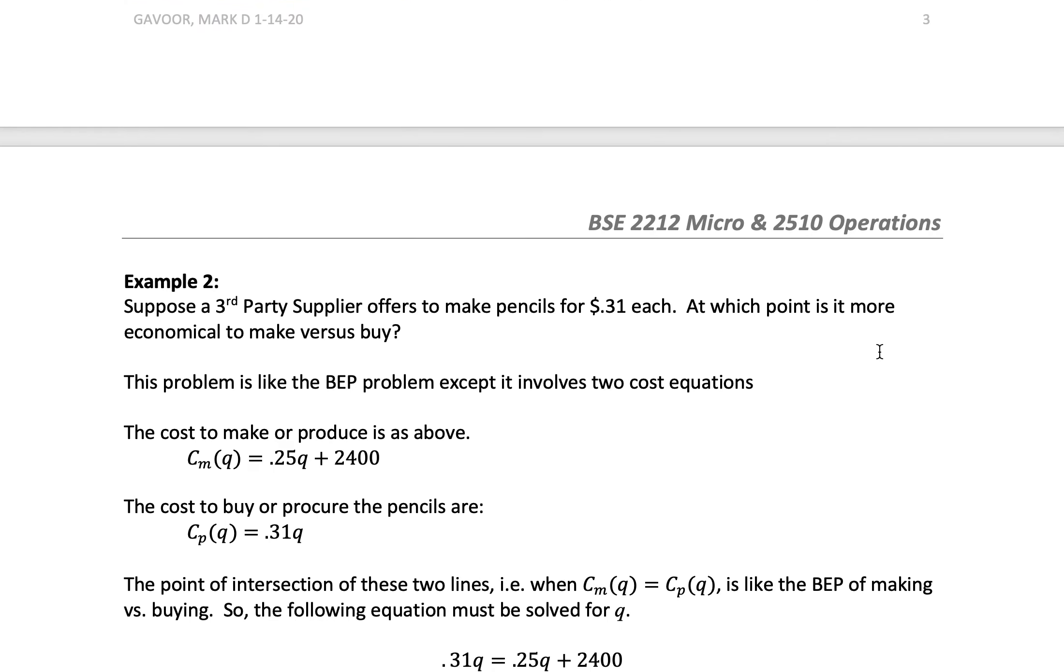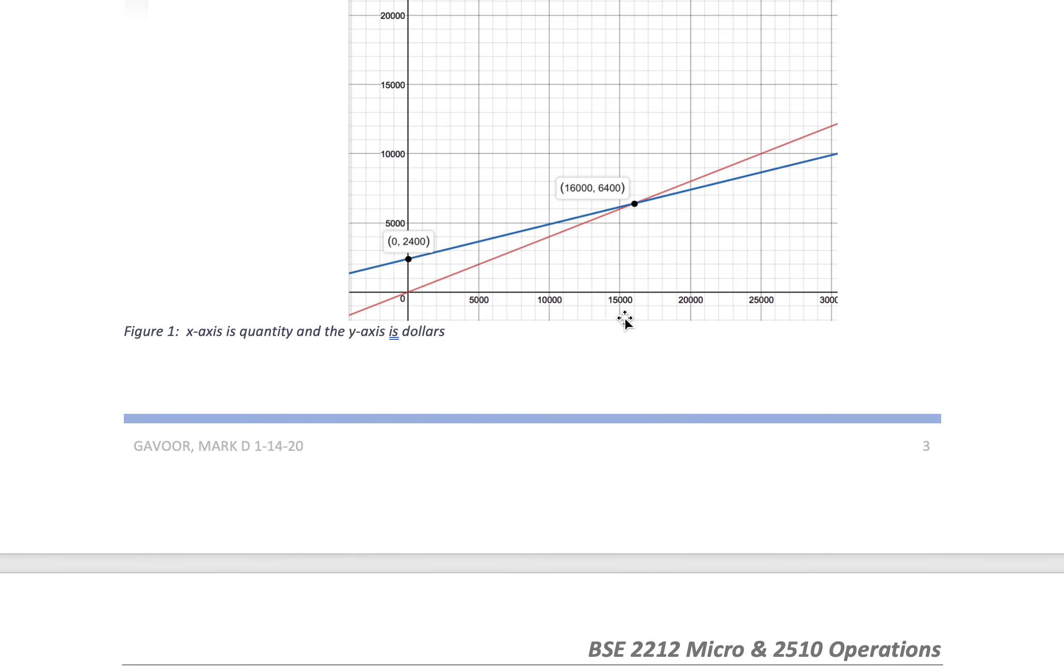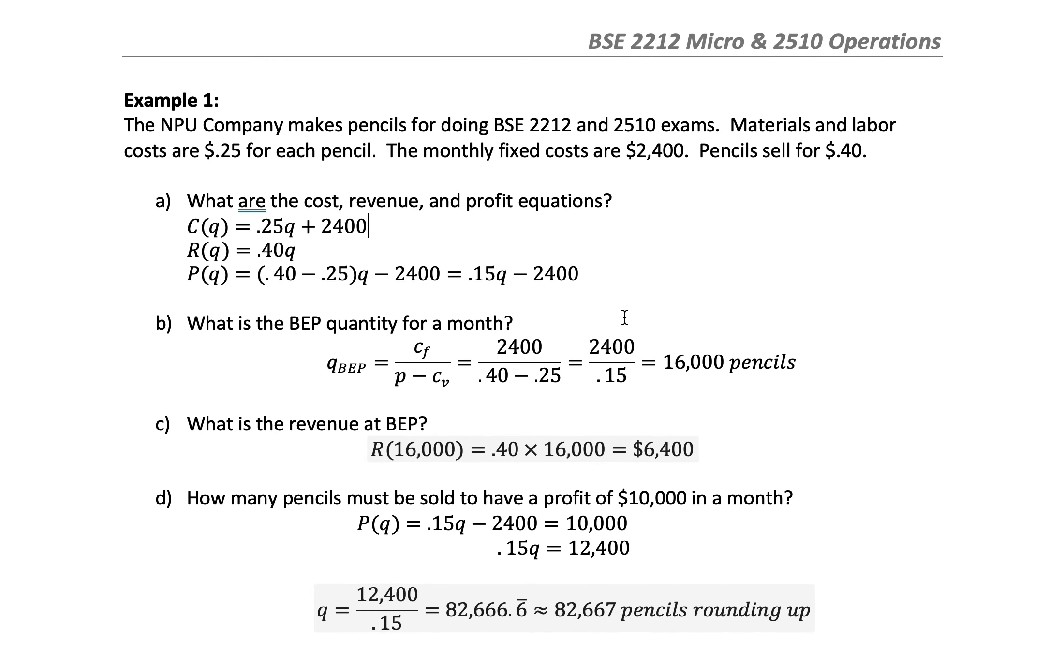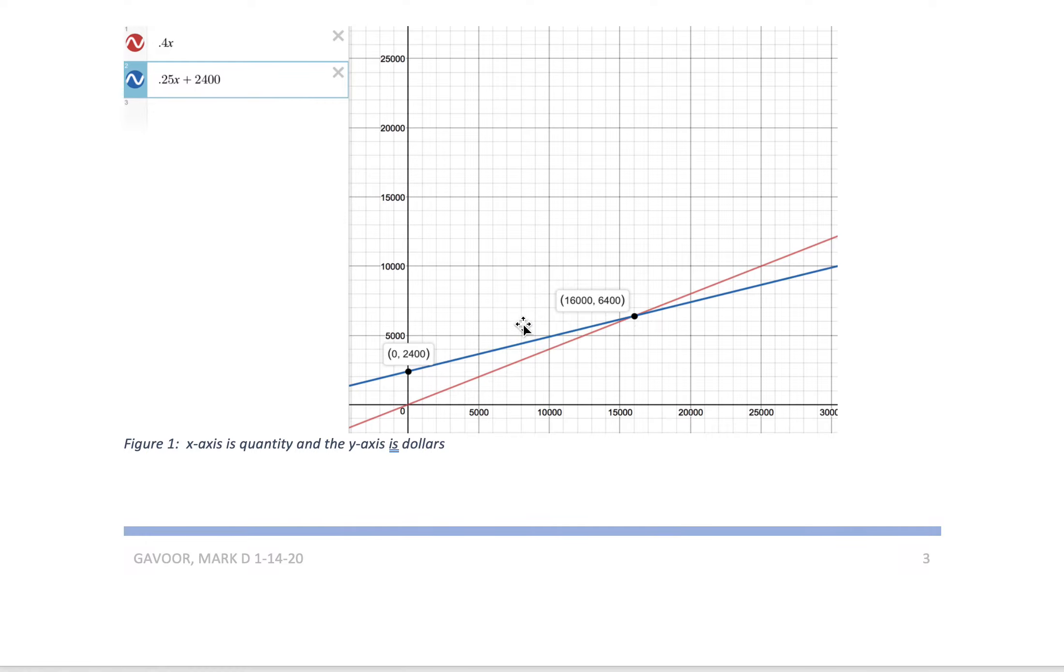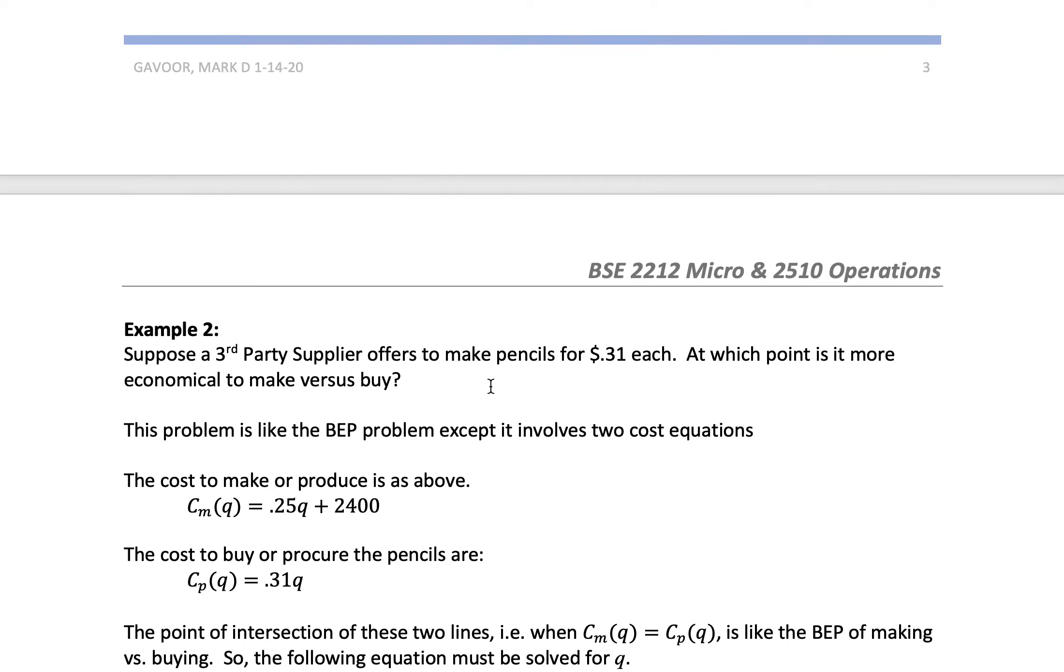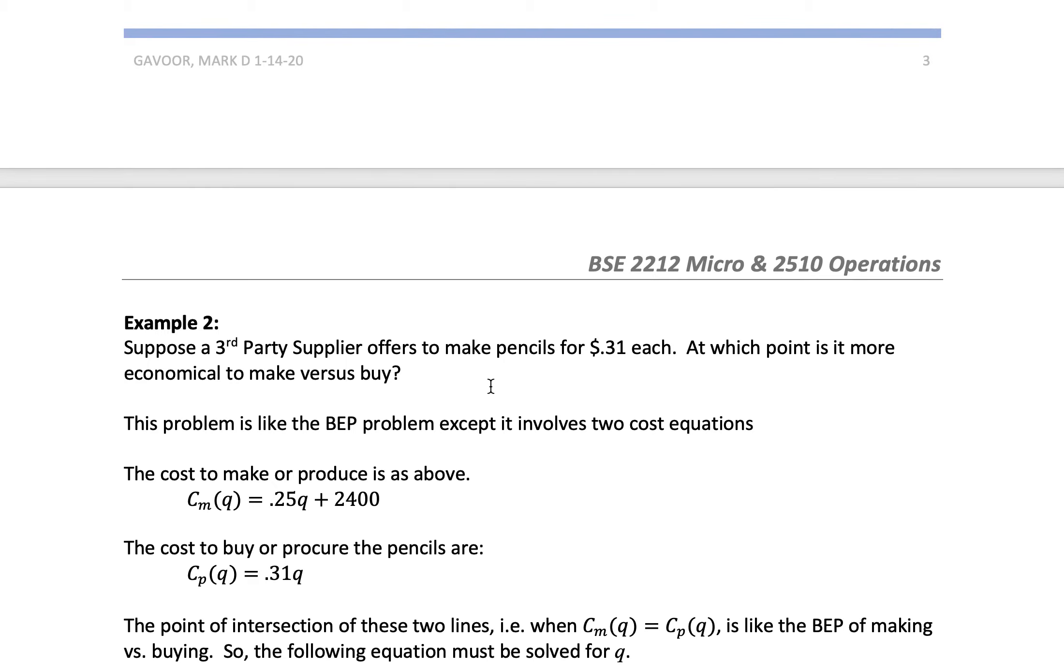Here's another example - a make versus buy variation. Suppose a third-party supplier offers to make pencils at $0.31 each. If we look at our original problem, it costs us only $0.25 to make pencils. At $0.31, it costs me more. But if I'm operating down here, it may be cheaper for me to buy the pencils. Since I don't have any fixed costs if I buy the pencils from someone else, that's why people outsource - they get rid of their fixed costs. At which point is it more economical to make versus buy?